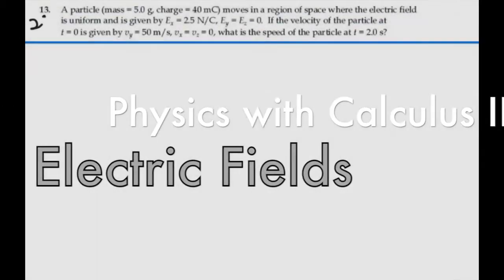Here's problem 23.13. A particle, mass 5 grams, charge 40 millicoulombs, moves in a region of space where the electric field is uniform and given by E sub x is 2.5 N per coulomb, E sub y is equal to E sub z is equal to 0. If the velocity of the particle at t equals 0 is given by V sub y is 50 meters per second, V sub x, V sub z is 0, what is the speed of the particle at t equals 2 seconds?